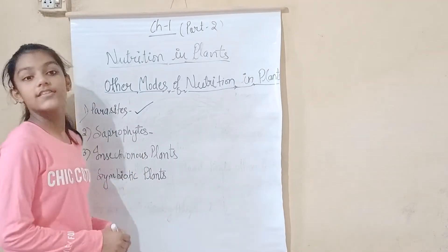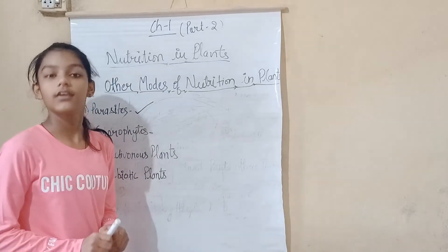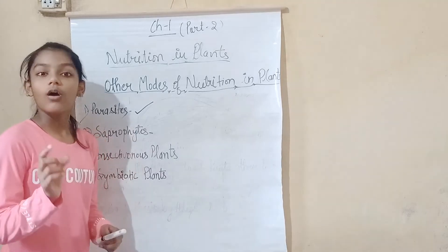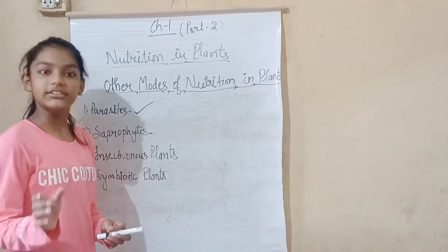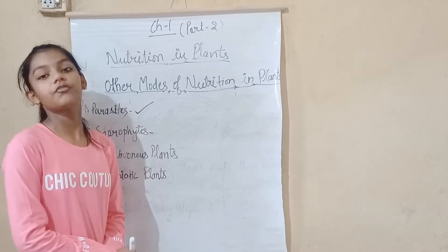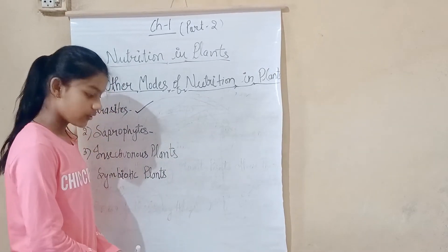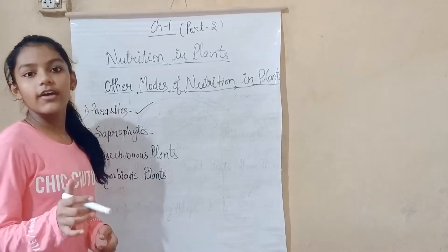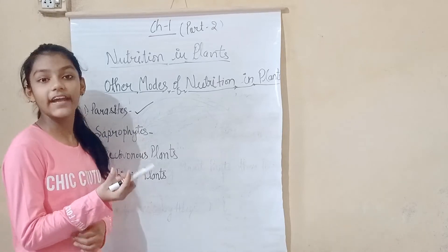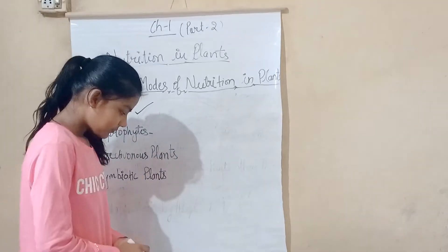Our next topic is saprophytes. Those non-green plants which obtain their food from dead and decaying organic matter are called saprophytes. These non-green plants are also called fungi. Examples include mushrooms, yeast, and red mould. In the rainy season, we have seen umbrella-shaped fungi growing on rotten wood in the forest — we call these fungi and mushrooms, and they are saprophytes.